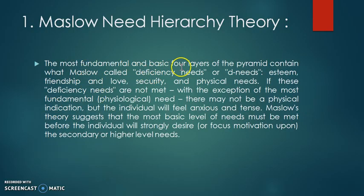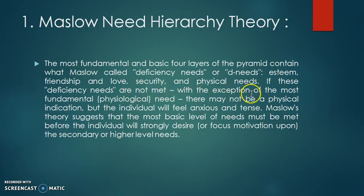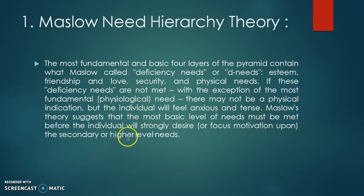The most fundamental core layer of the pyramid contains what Maslow called deficiency needs, or D-needs: esteem, friendship and love, security, and physical needs. If these deficiency needs are not met — with the exception of the most fundamental need — there may not be a physical indication, but the individual will feel anxious and tense. Maslow's theory suggests that the most basic level of needs must be met before the individual will strongly desire secondary or higher-level needs.